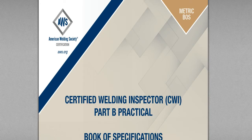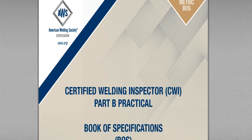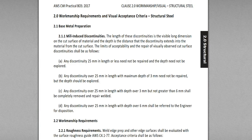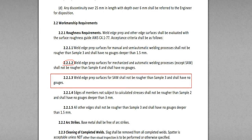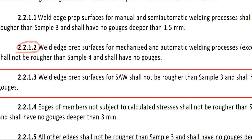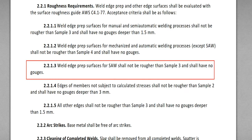Hi guys. Welcome to the lecture of CWI Part B, Book of Specification. Last time, we went through Chapter 2, Workmanship Requirements and Visual Acceptance Criteria Structural Steel, and specifically 2.2.2 Roughness Requirements. Today, I'm going to give you the lecture of 2.2.1.3 Steel Roughness Requirements. I'm going to read the specification and give you the interpretation of 2.2.1.3.